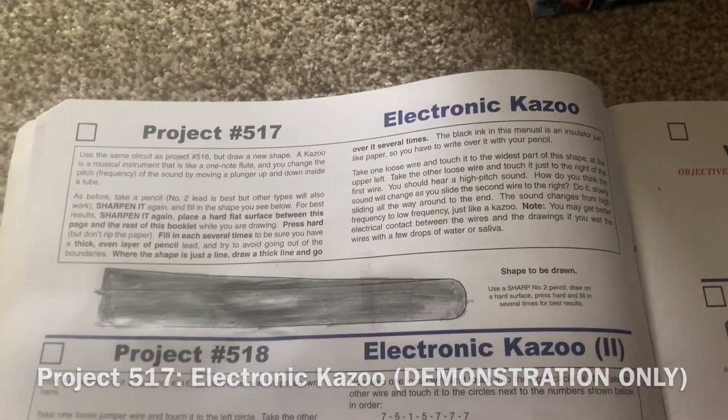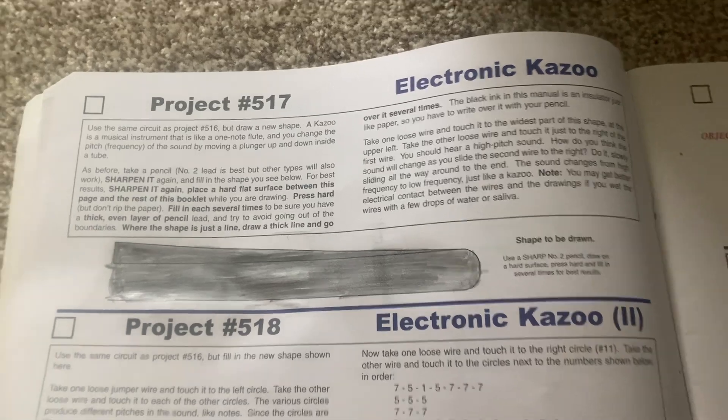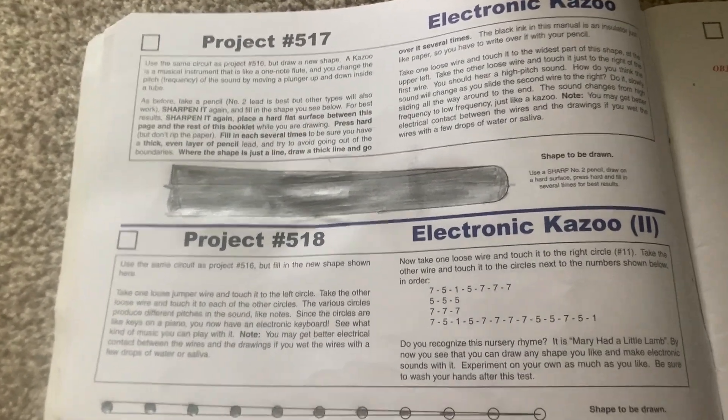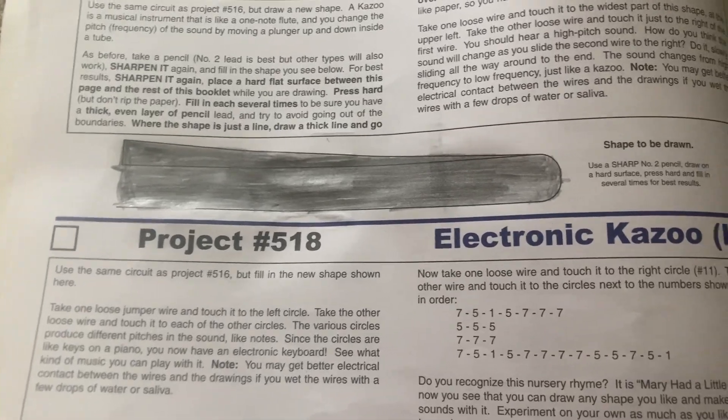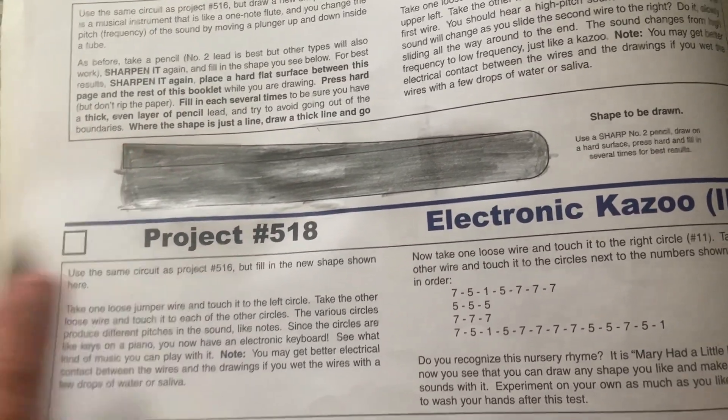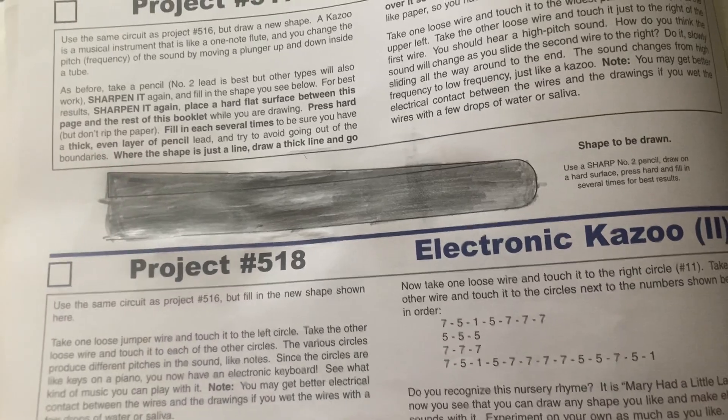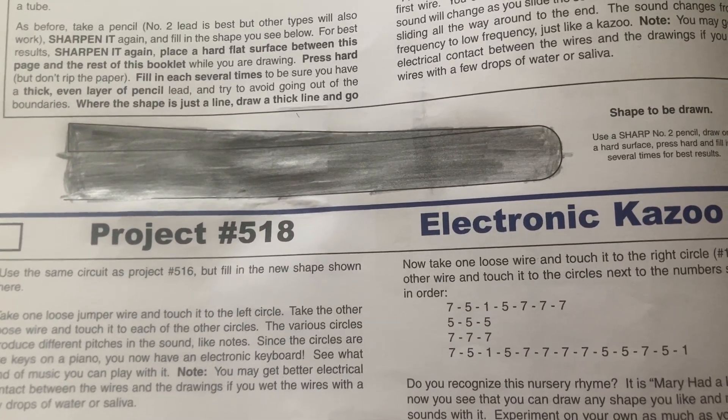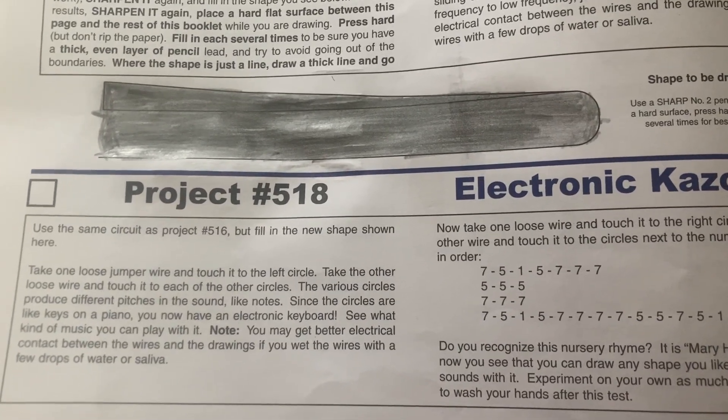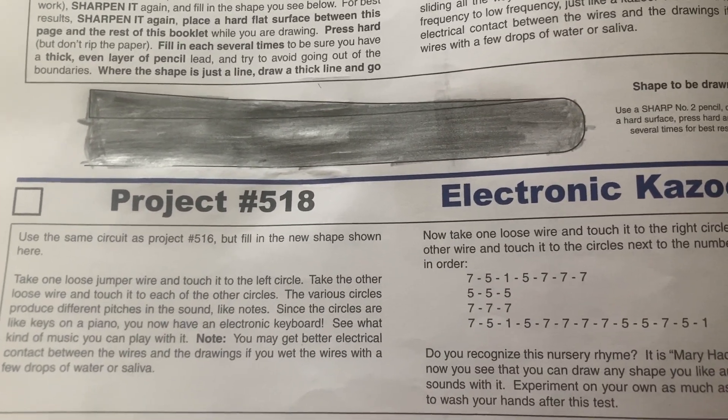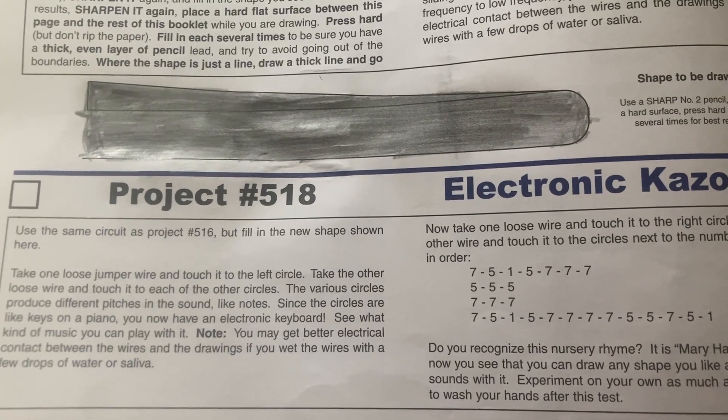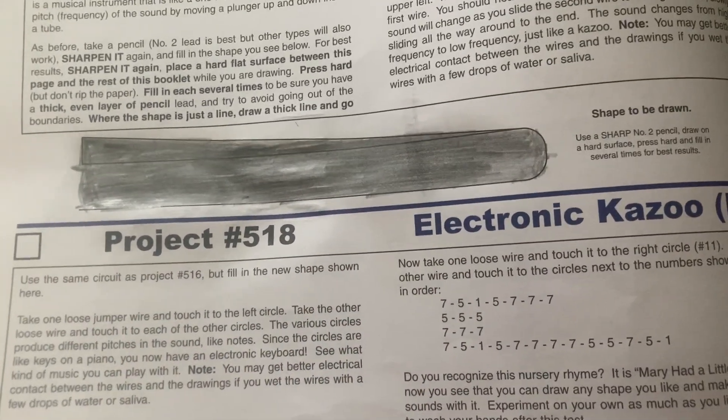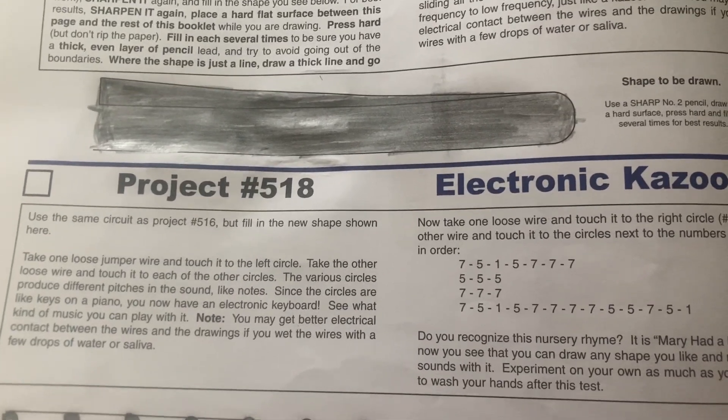The next project is an electronic kazoo. Once again, I can't demonstrate it because I need two hands and one is holding my phone. But what you would do is place the end of one jumper wire to the upper left corner of the shape and place the end of the second jumper wire right next to it. And you should hear a high pitch sound. Then you would take the other jumper wire, the one just to the right of the first, and move it slowly along the shape toward the right. And the pitch should become lower.